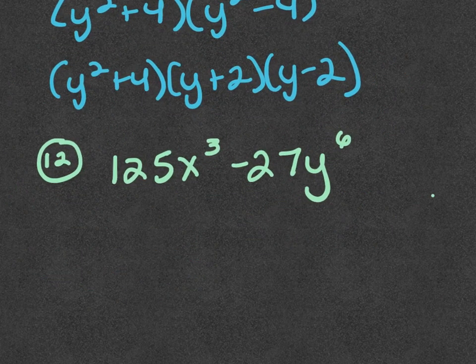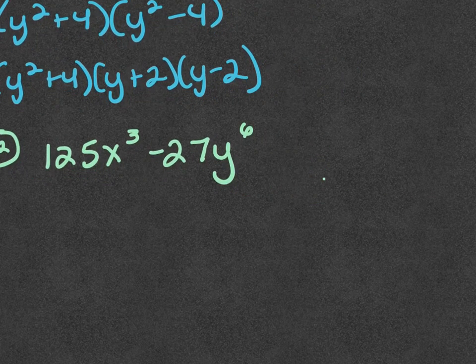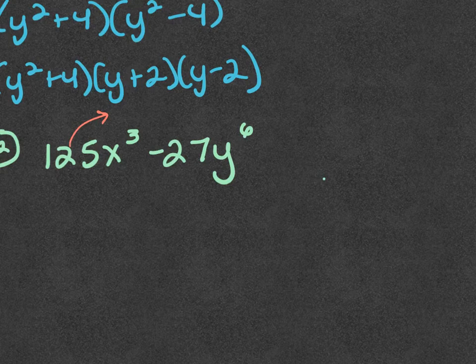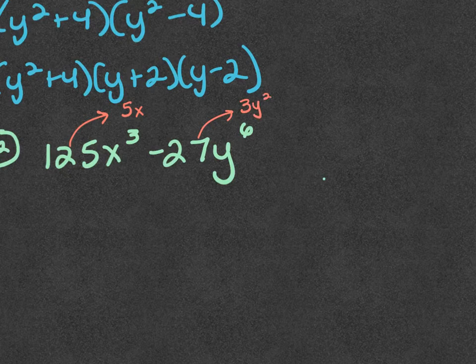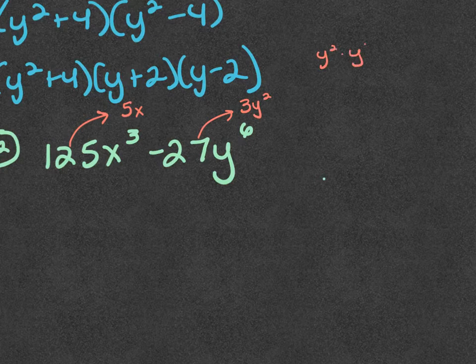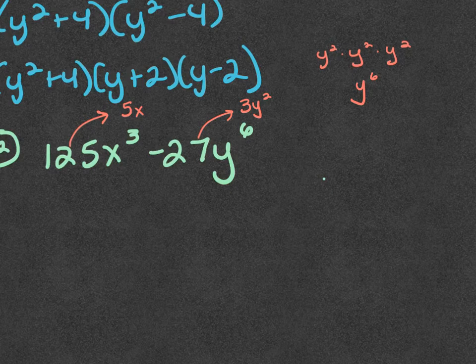OK, so we're going to take a look at the difference of two perfect cubes. So remember we do the cube root of the first one. The cube root of 125 is 5. The cube root of x to the third is x. We do the cube root of the second one. The cube root of 27 is 3. The cube root of y to the sixth is y squared because y squared times y squared times y squared gives you y to the sixth. So you take it and divide it by two, okay?